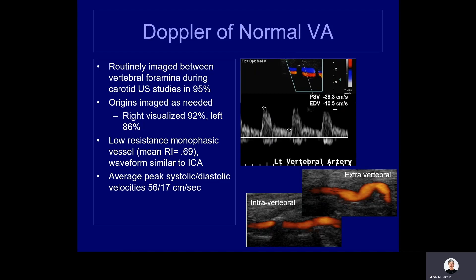The waveforms from a normal vertebral artery are low-resistance monophasic, similar to an internal carotid artery, as you can see here. The average peak systolic velocity is approximately 56, though there is a range depending on dominance of a vertebral artery. These are color Doppler images of the extravertebral segment and the intravertebral segment with the shadows from the vertebral bodies.